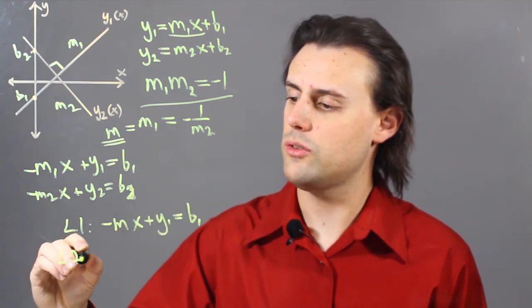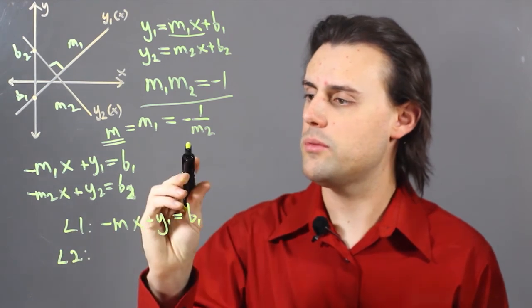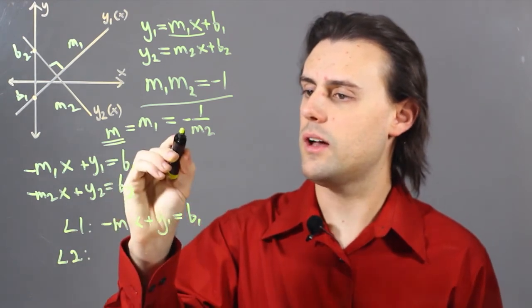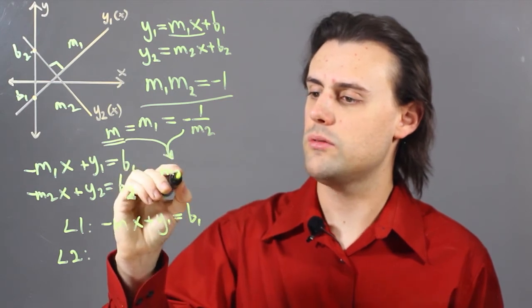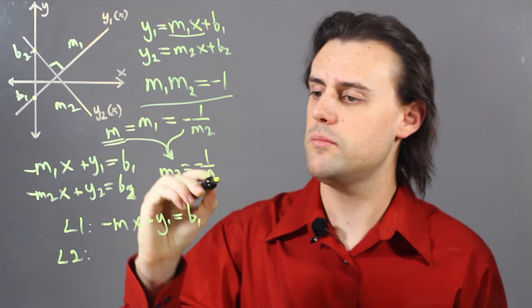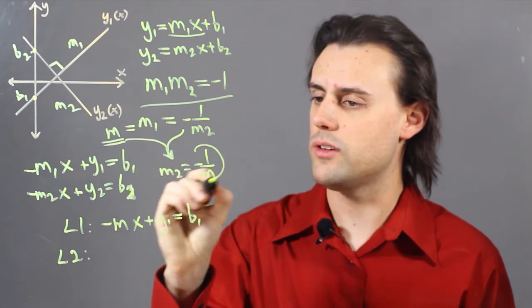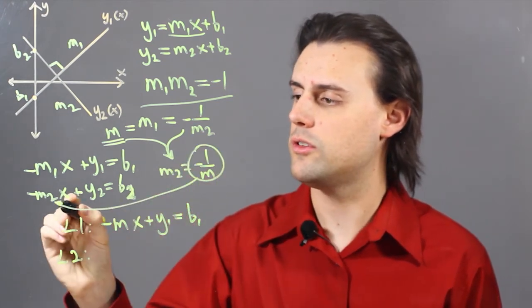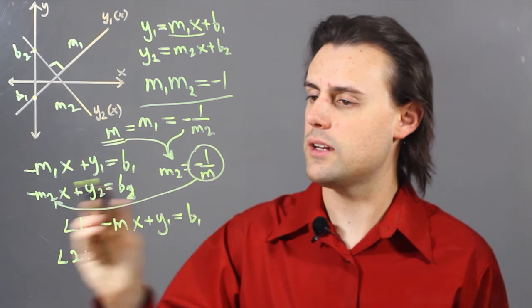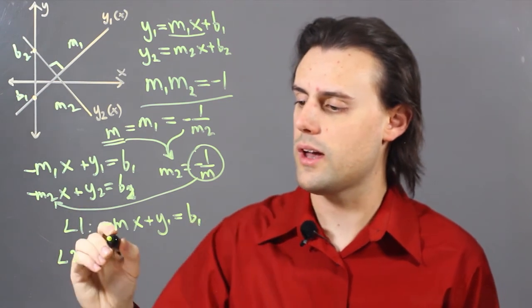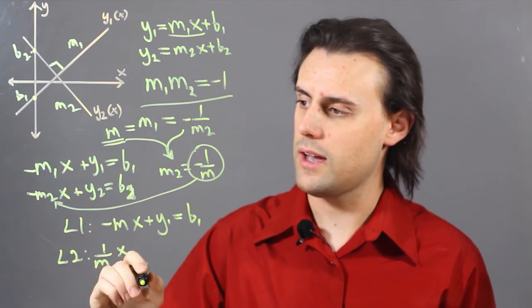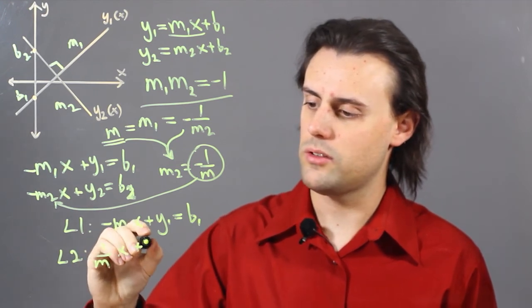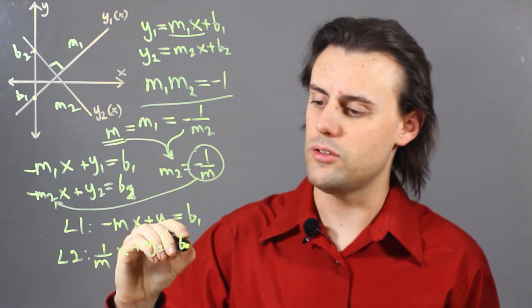And for line 2, if I substitute in m, I see that there's a relationship here that m2 is going to be equal to negative 1 over m. So I substitute this in for m2, and I get negatives cancelling each other out. So I have 1 over m times x plus y2 is equal to b2.